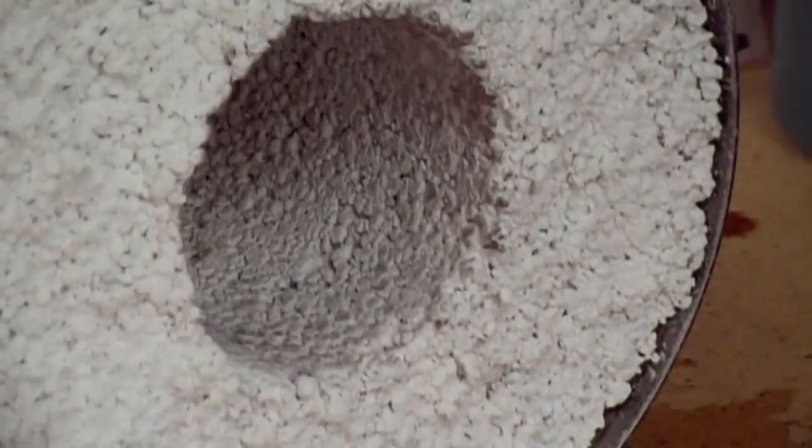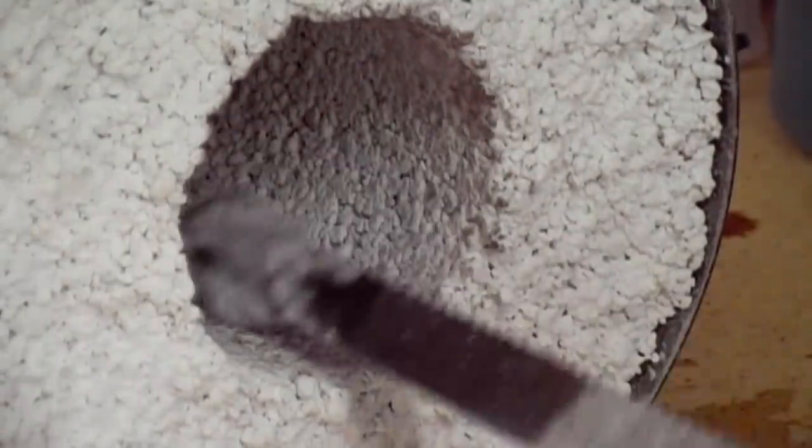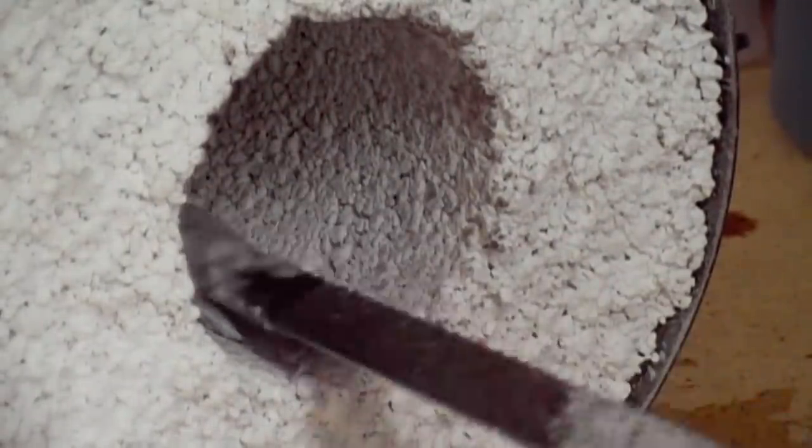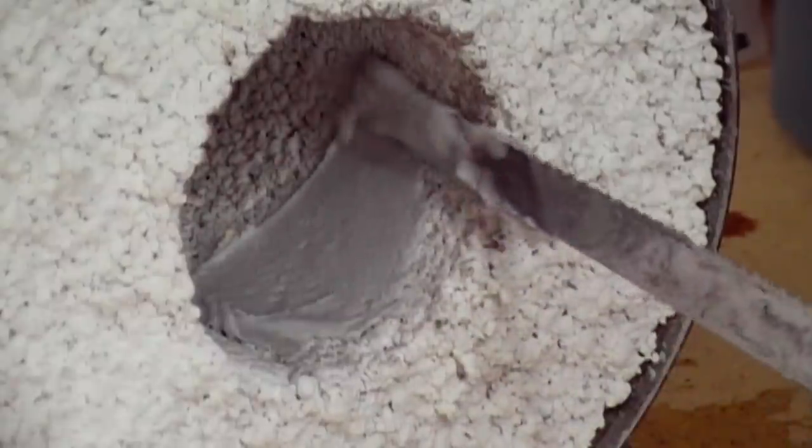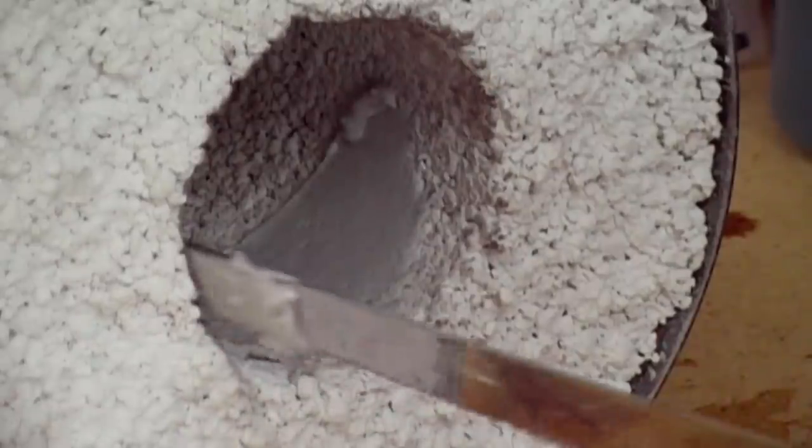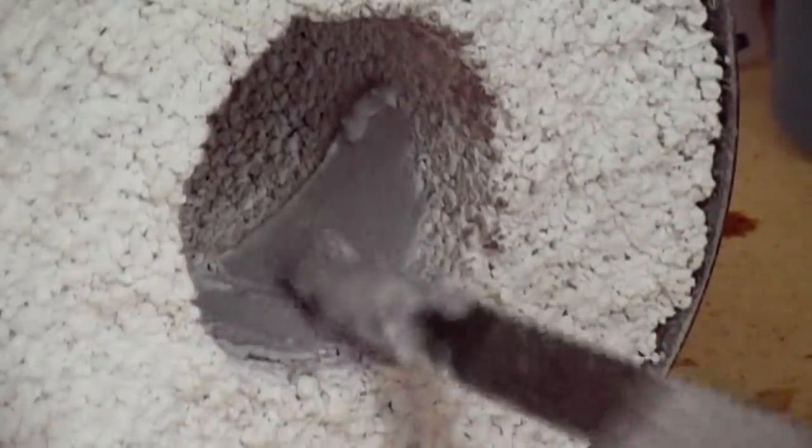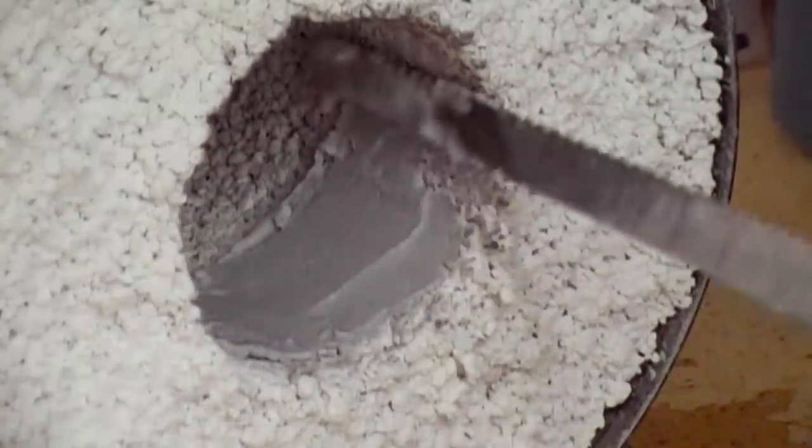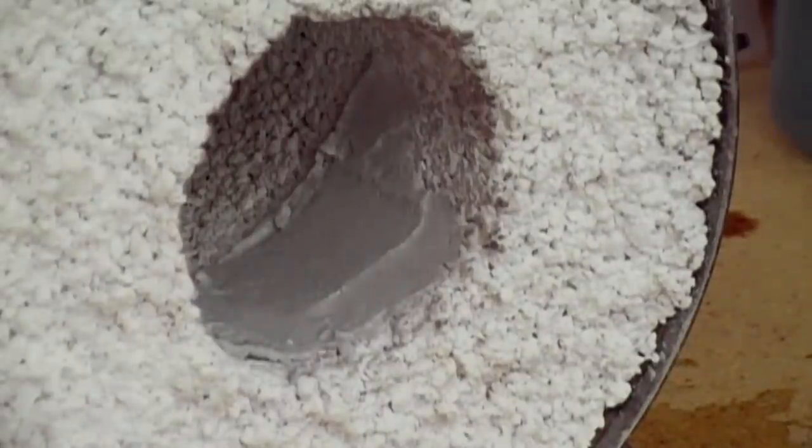Now that my high temperature cement is mixed, I simply spread it onto the surface of the refractory lining. It's about the consistency of cake frosting in a similar process.